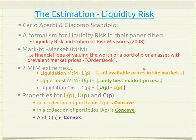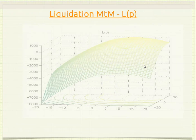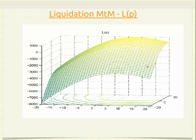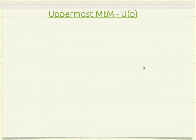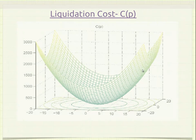In a collection of portfolios, L is concave, U is equally concave, while C is convex. Using real market data, final results for L, U, and C are valid if they satisfy these properties. The diagrammatic representations show L as concave, U as concave but not strictly concave, and C as convex but not totally convex.